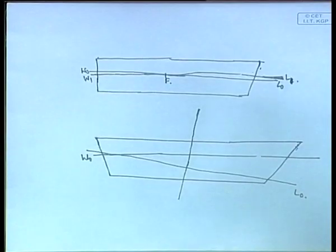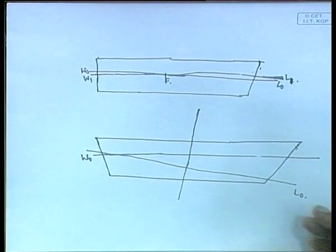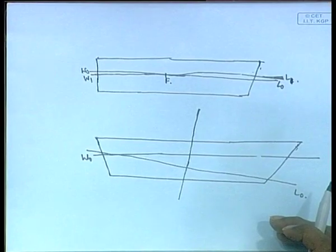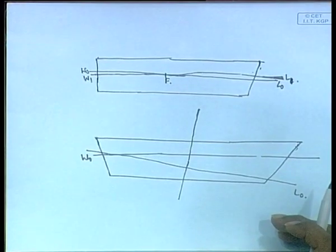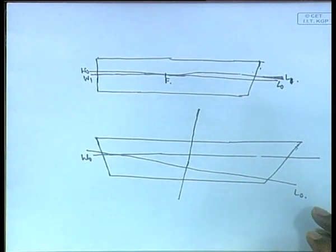W0L0 in the figure represents the upright condition but is drawn slanted just for simplicity, so that the final W1L1 is horizontal and geometry can be worked with more easily. The initial center of buoyancy is B0 and the final center of buoyancy is B1, just as in the heeling case.